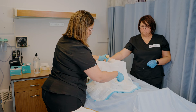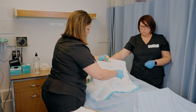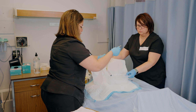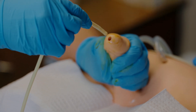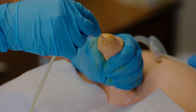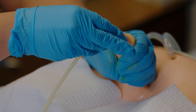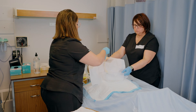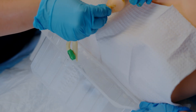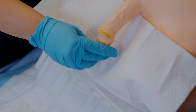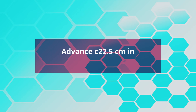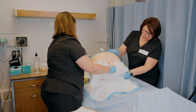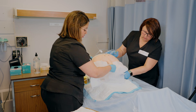Pick up the catheter with the dominant gloved hand 7.5 to 10 centimeters from the catheter tip. Hold the end of the catheter loosely coiled in the palm of the dominant hand. For male patients, lift the penis to a position perpendicular to the client's body and apply light traction. Ask the client to bear down as if voiding and slowly insert the catheter through the urethral meatus. Advance the catheter 17 to 22.5 centimeters in an adult, or until urine flows out.